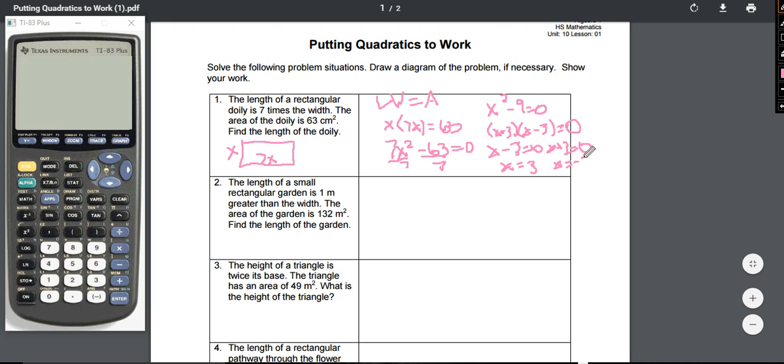We've talked about this whenever you have a real world situation with quadratics and we get a positive answer and a negative answer. We're looking for a distance, the width of this thing. So it doesn't make sense to be negative three. We know that the width is actually three centimeters. If the width is three centimeters, then the length would be seven times three or twenty-one centimeters.